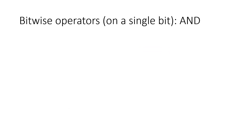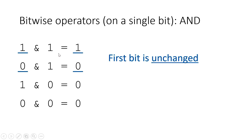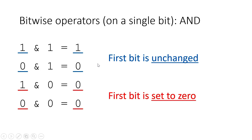First, let's look at the AND operator on single bits. One AND one gives one. Zero AND one gives zero. One AND zero gives zero. Zero AND zero gives zero. What you'll notice is that for the first two rows, the first bit is unchanged — one ANDed with one is still one, and zero ANDed with one is still zero. For the last two rows, the first bit is set to zero regardless of whether you started with zero or one, because ANDing with zero always gives zero.